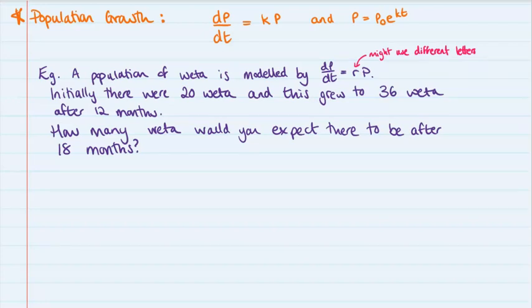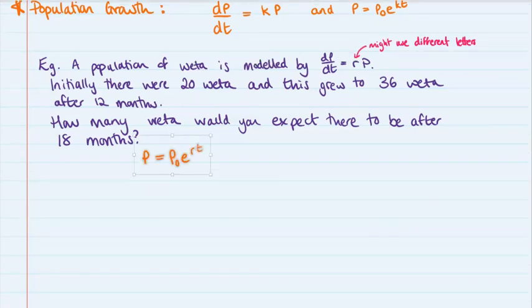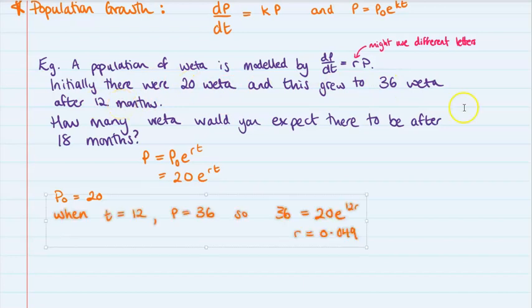So here we go. We have this population version of the growth and decay equation. And we're told that the initial value is 20. So we'll put in that starting off value as being 20 e to the rt for the overall equation. Now, we're going to use the information that we've been given in the question to work out what this constant needs to be. So we know this equation is true for there being 36 weta at 12 months. So if we pop that in, we get when t is equal to 12,